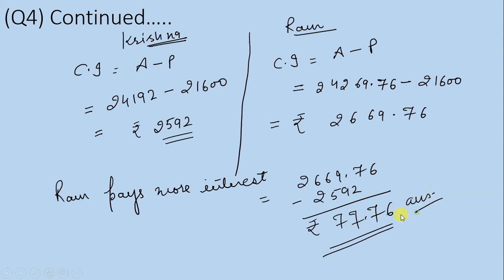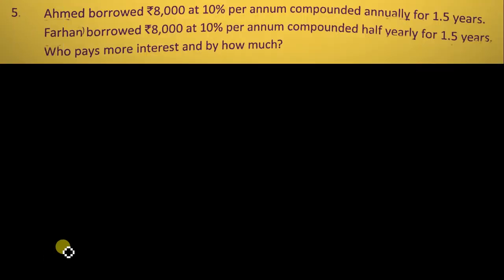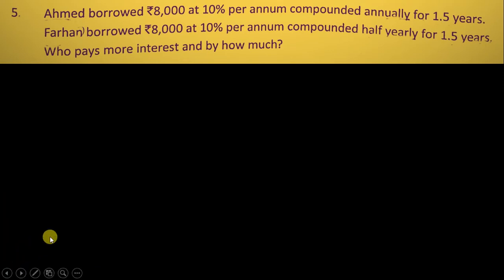That is your answer. Next question: Ahmed borrowed 8,000 at 10% per annum compounded annually for 1.5 years and Farhan borrowed 8,000 at 10% per annum compounded half-yearly.